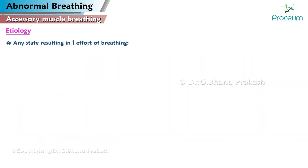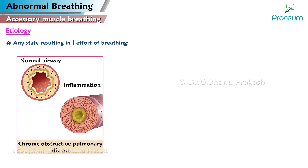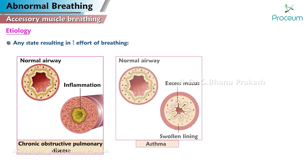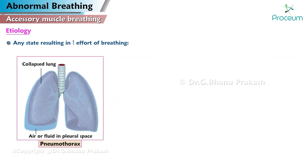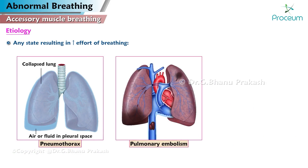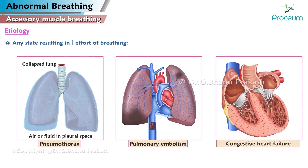Any state resulting in an increased effort of breathing, such as chronic obstructive pulmonary disease, asthma, pneumonia, pneumothorax, pulmonary embolism, or congestive heart failure, can lead to accessory muscle use.